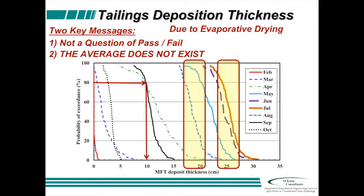This shows the probability of exceedance as a function of placement thickness of tailings for different months of the year due to evaporative drying. For the month of September, if I put material out at 10 centimeters thick, I've got an 80% probability of moving from my initial state to the final desired state. As I have higher evaporative conditions in May, August, June, and July, my probability of meeting 25 centimeters is about 80% as well. That's what potentially happens in any given year — not the average. This allows us to take advantage of 100 years of climate data to understand the system's response, rather than applying an average year.